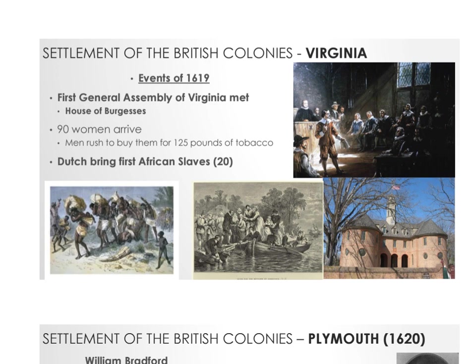The year 1619 was pivotal for Virginia. First, the first General Assembly of Virginia met — self-government in the Americas, almost like a city council choosing leaders and agreeing to follow their own laws. This happened in 1619, not 1776, because the chaos in England during the 1600s meant colonists had to take care of themselves. Also in 1619, 90 women arrived — a man could buy a wife for 125 pounds of tobacco. And by our best records, the first African slaves arrived: 20 of them, brought over by the Dutch.